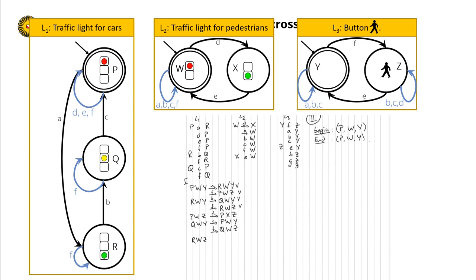In R, W, Z: R allows B and F; W allows B and F; but Z cannot do F. So B is the only action allowed by all three. B leads R to Q, W to W, and Z to Z. In P, X, Z: P allows A, D, E, and F; X allows only E; Z also allows E. So E is the only action enabled. Doing E: P leads to P, X leads to W, Z leads to Y.